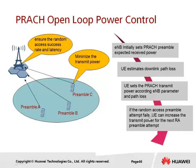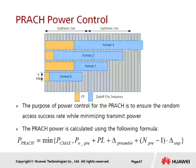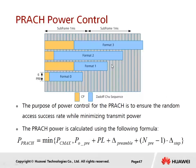If the first preamble fails, the UE will increase the transmit power for the next preamble attempt. In LTE, there are a few preamble formats which have been defined in 3GPP.